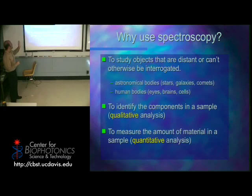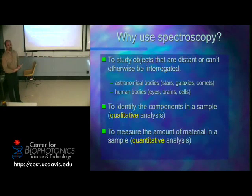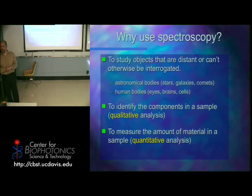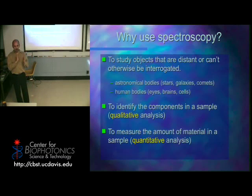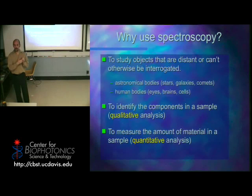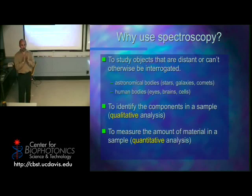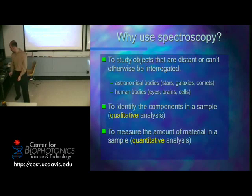Spectroscopy can be used to identify what's in a sample — that's called qualitative. But it can also help you figure out how much of something is in a sample — that's quantitative. Do you remember Beer's Law? Beer's Law has a straightforward formula: how long is the path you're sending the light through, times the specific absorption of the material inside your path, times the concentration. That equals the absorbance. You measure the absorbance with your instrument, figure out the path length, and if you know the absorption coefficient for the species, you can solve for concentration.